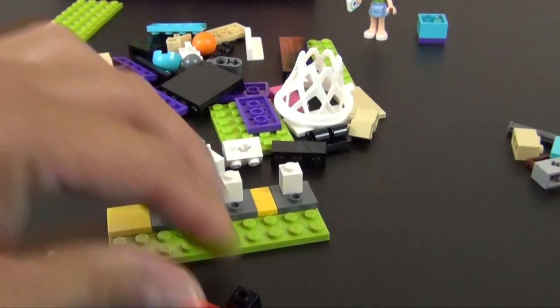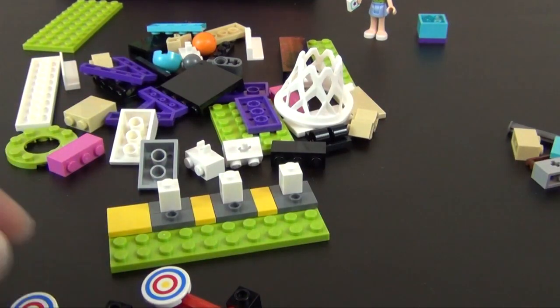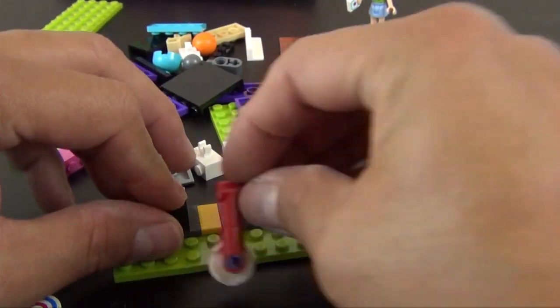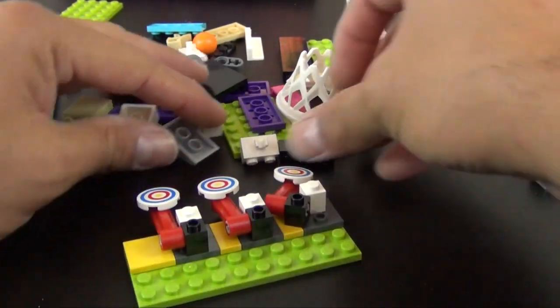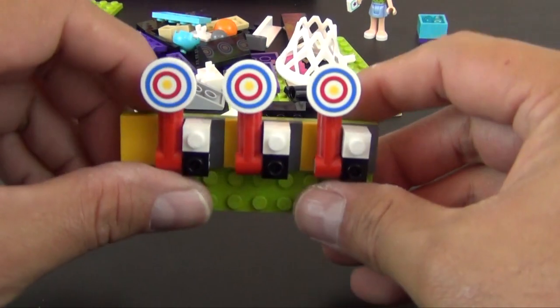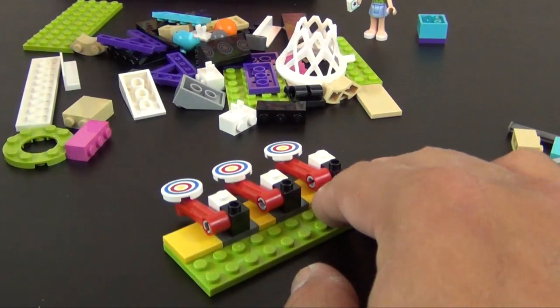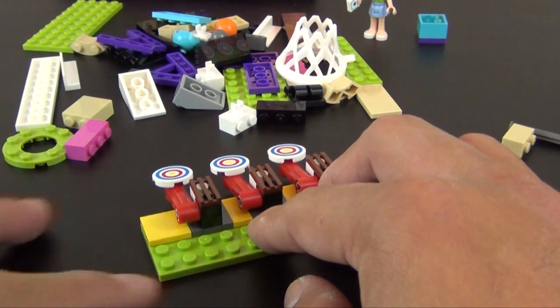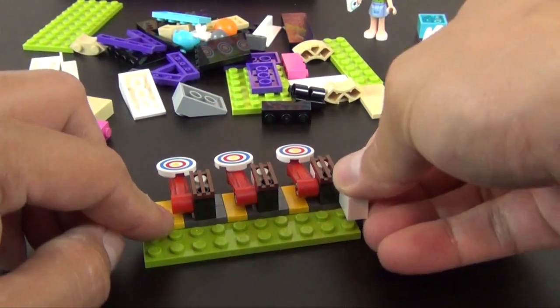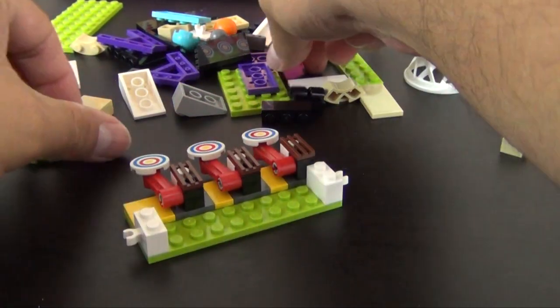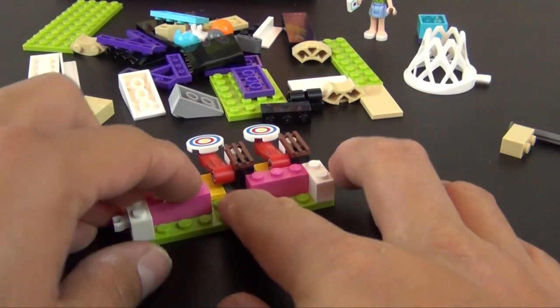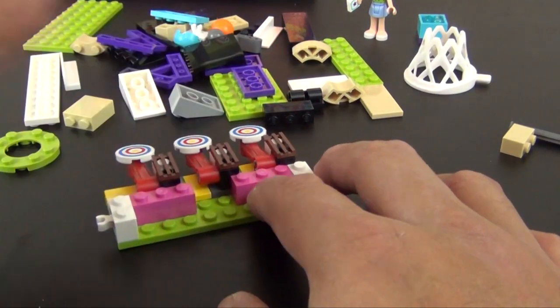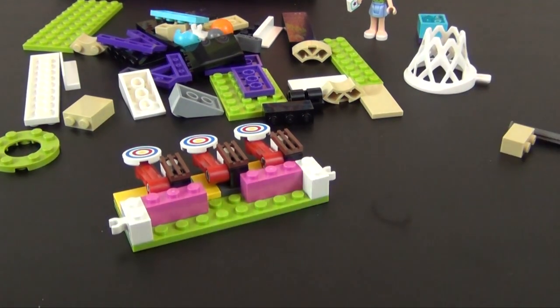And then they go on to a black Technic brick, just like that. Those all go there. So there's our targets. Now we have three reddish-brown slotted tiles. Go over each one of those. Some bricks with clips on the side, and then some pink bricks. And they show them in the upward position, but they actually won't stay there yet. We've got to put some more stuff on there.